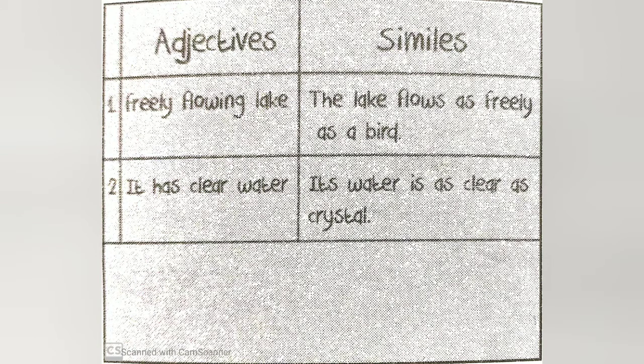The paragraph describes a place in someone's hometown which has a lake. The lake, the fish, and the birds are described in the paragraph. Some adjectives used are: flowing, clear, colorful, beautiful, and blue.